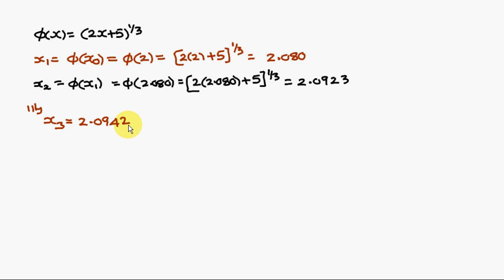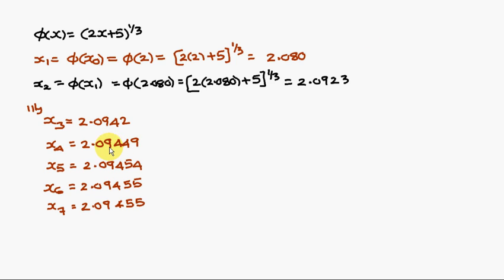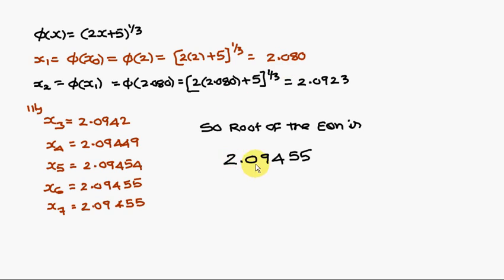Continuing: x3 = 2.0942, x4 = 2.09449, x5 = 2.09454, x6 = 2.09455, x7 = 2.09455. Since x6 and x7 are approximately the same, we stop. Therefore, the root of the equation is 2.09455.